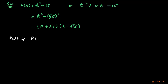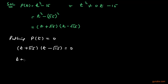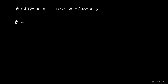We shall put P(T) equals zero, which means we put T plus square root of 15, into T minus square root of 15, equals zero. This gives T equals minus square root of 15, or T equals positive square root of 15. These are the two zeros of the given polynomial P(T).